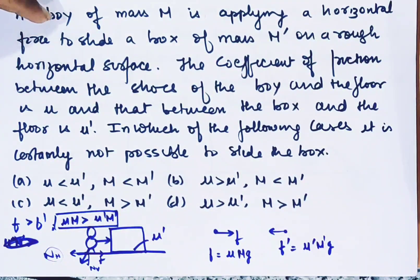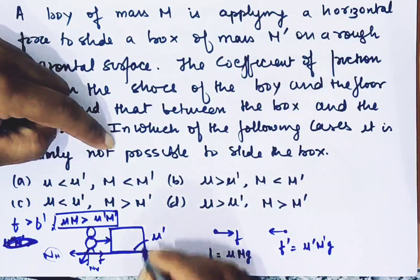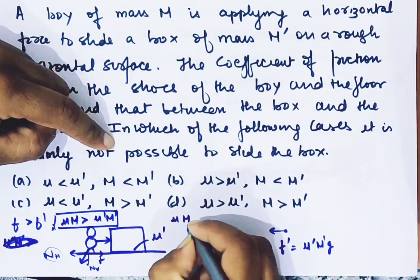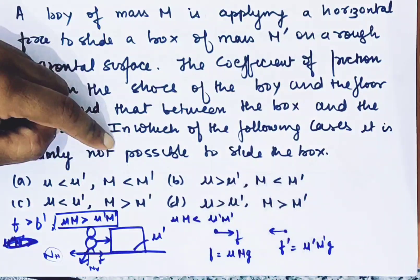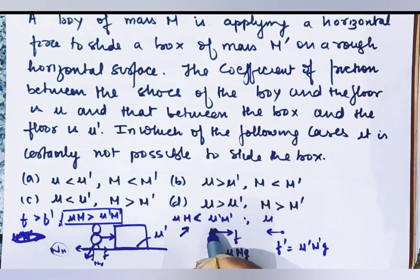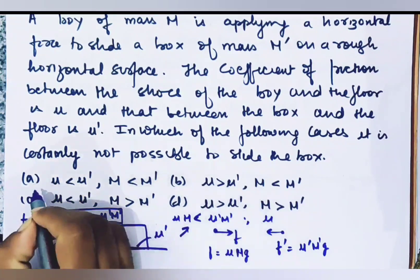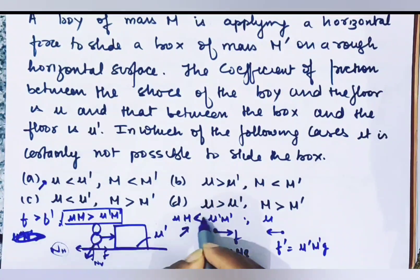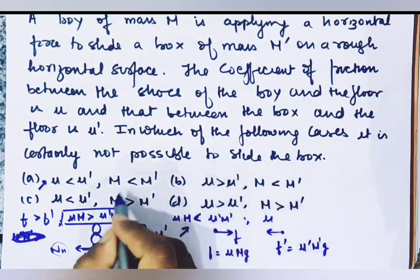But for NOT being able to slide the box, we need μmg to be less than μ'm'g. From this we can see the most suitable case is (a), because μ < μ' and m < m', making it impossible to slide the box.